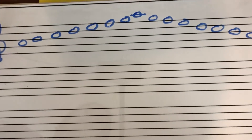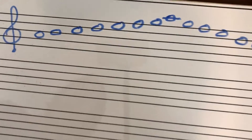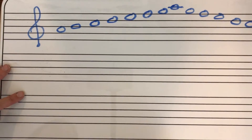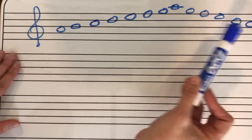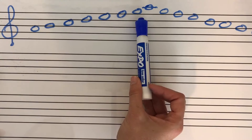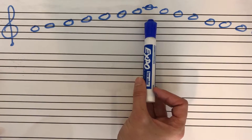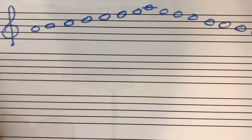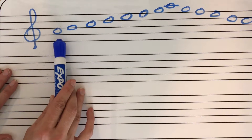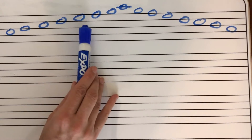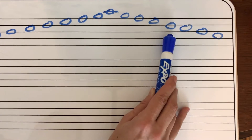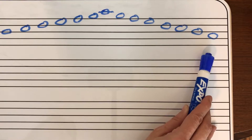I'm using this big marker board to show you a little bit more than I can on my tin sheet. I've written out the A natural minor scale in the treble clef — ascending going up and descending going down. Natural minor means it follows the key signature with no sharps or flats. Let's name the notes: A, B, C, D, E, F, G, A — and back down: G, F, E, D, C, B, A.